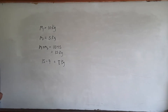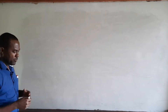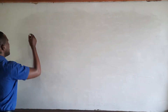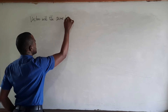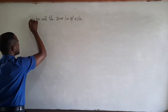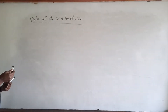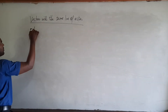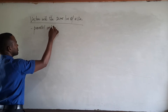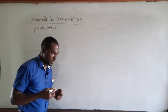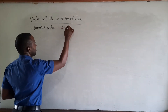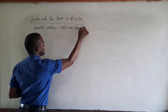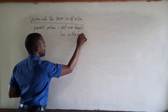Now let's look at adding vectors, starting with vectors that have the same line of action. The first type we will look at is parallel vectors. If two vectors are said to be parallel, it means they act in the same straight line and also in the same direction.